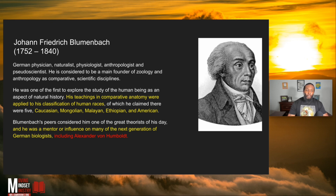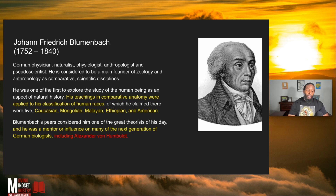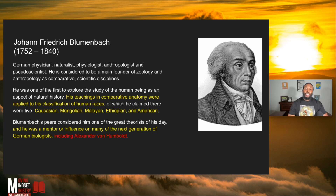The five races were: Caucasian, Mongolian, Malayan, Ethiopian, and American. So 'American,' according to this gentleman, is a race — that's what he thought or believed. Blumenbach's peers considered him to be one of the greatest theorists of his day.